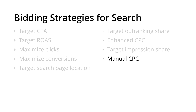Finally, there is Manual CPC. This gives you full control over your bids — you set the maximum you want to spend on any given click within the campaign. We set a default bid at the ad group level, but we also have the ability to set our own manual bid at the individual keyword level as well.